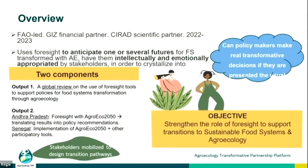Foresight is often there to help policy making or strategy making, and it can be done at different levels. The goal is to make sure that policymakers make real transformative decisions and are not presented only with the business-as-usual position. The project had three components: a global component which was a global review of foresight processes from the last six to eight years dealing with food system transformation and agroecology, plus two pilot studies — one in Andhra Pradesh using an agribium model combining modeling and narratives, and one in Senegal.